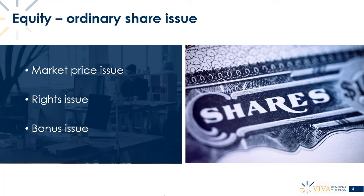A rights issue sits between the other two. If the market value of a share is $10 and the par value is $1, a rights issue could be set anywhere in between — perhaps at $8. Shares would be sold at $8 to existing shareholders as a thank you for their loyalty: not free, but less than market value. Companies can choose between market price issues, rights issues, or bonus issues.